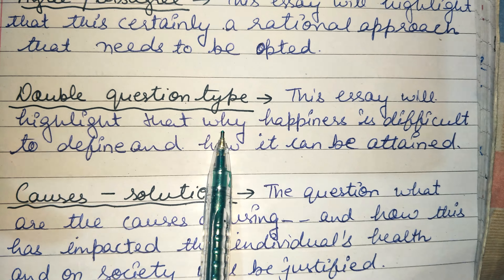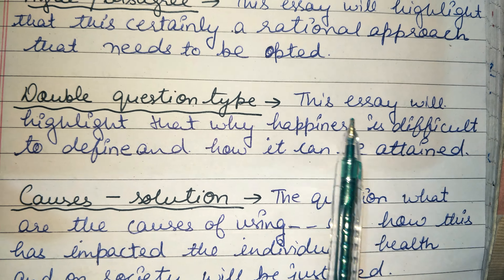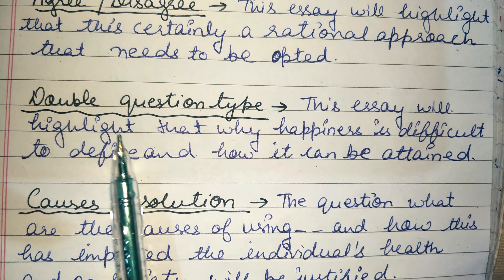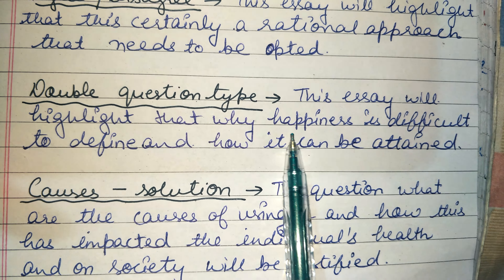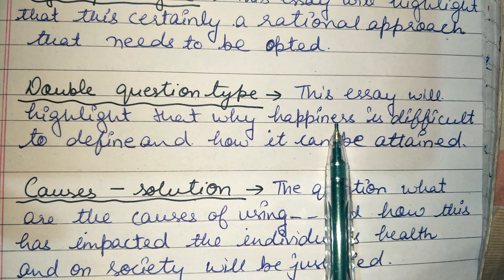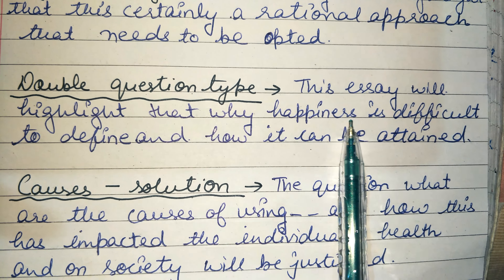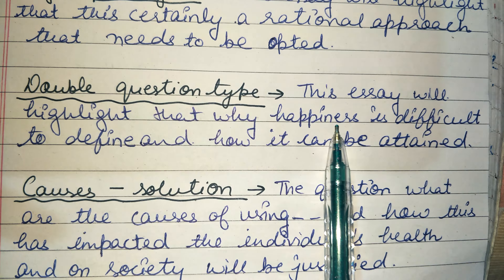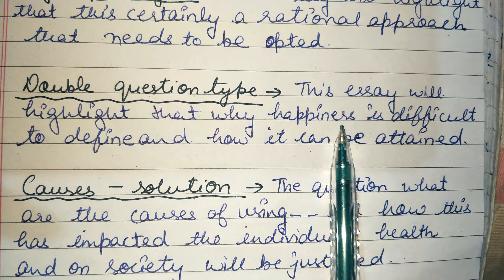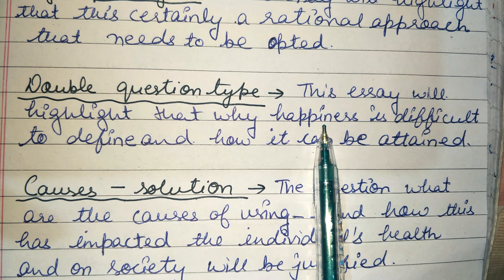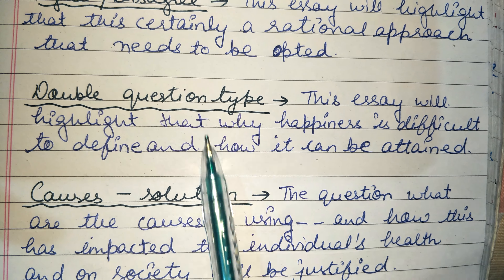Sometimes our questions are double-type questions. In that case, the thesis line is different. For example, if the question says 'Why is happiness difficult?' or asks 'What is the definition of happiness according to you and how can we achieve it?' — then the approach changes.